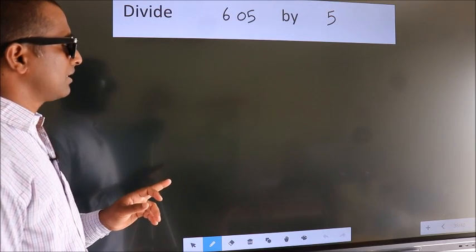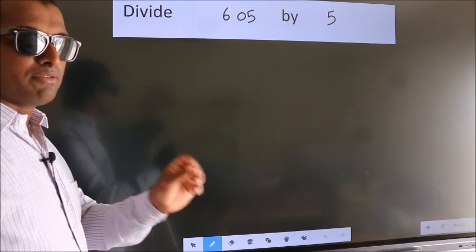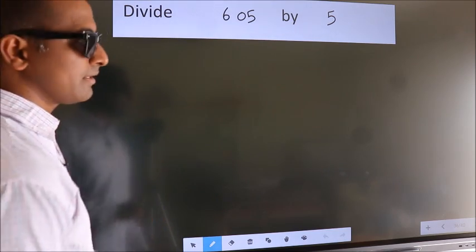Divide 605 by 5. To do this division, we should frame it in this way.